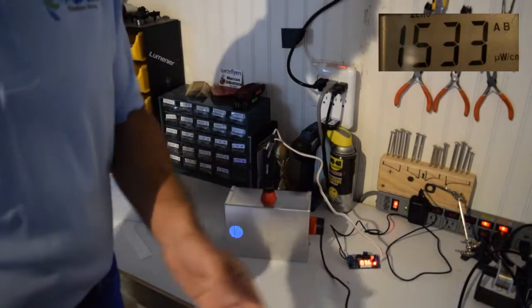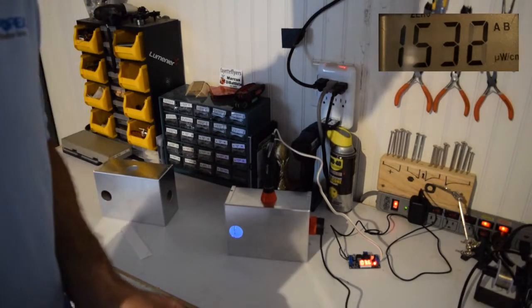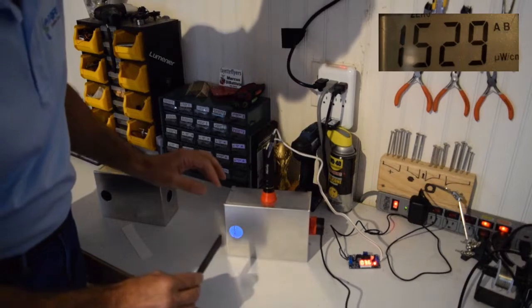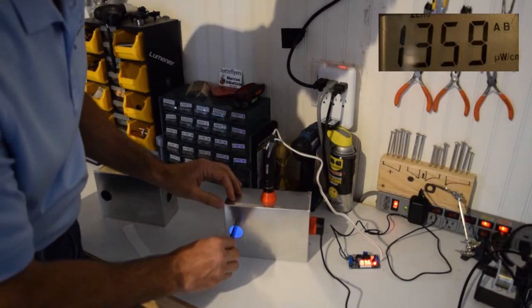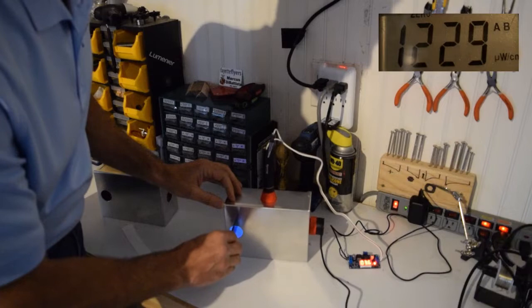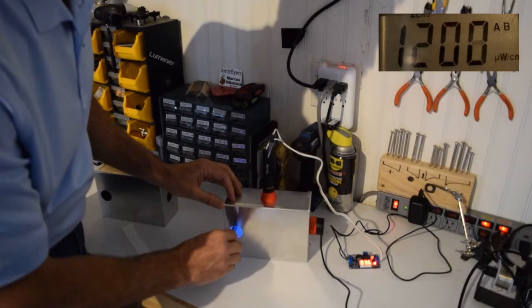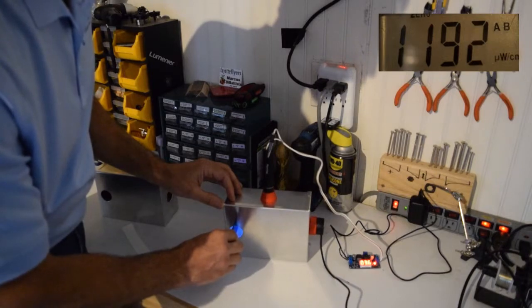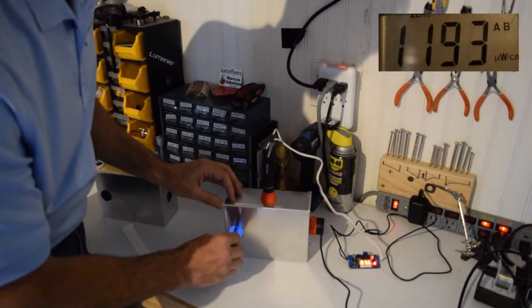Our initial reading is around 1530 and we'll insert the object and you can see what happens. As the object is inserted the amount of energy drops down to about 1200, which means the object is absorbing around 320 or 330 milliwatts.